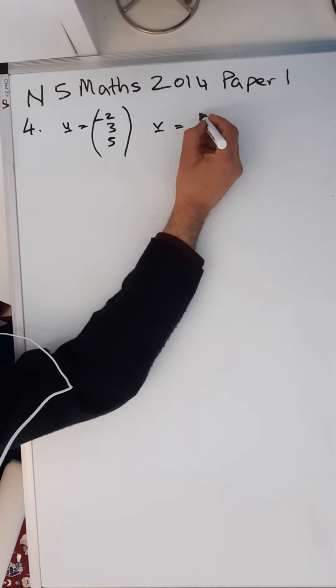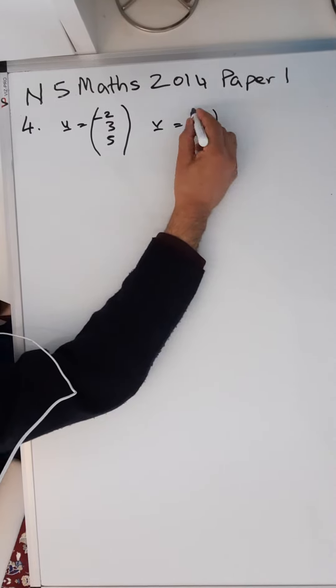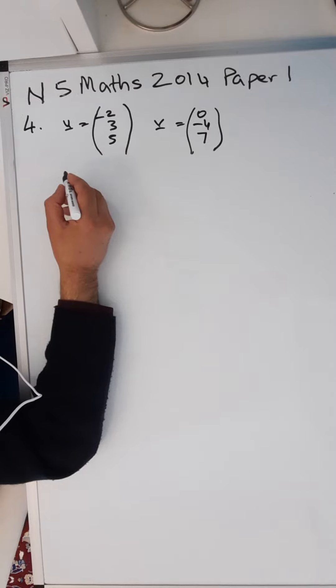v is equal to zero, minus four, seven. These are the two vectors and you're asked to find the resultant vector two u minus v.